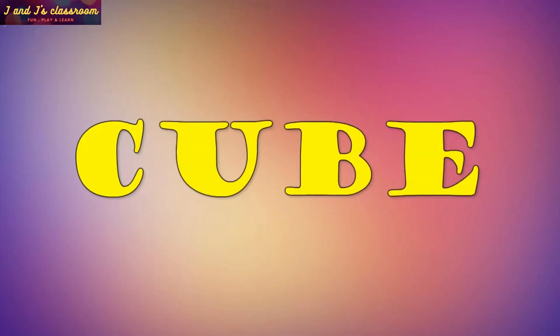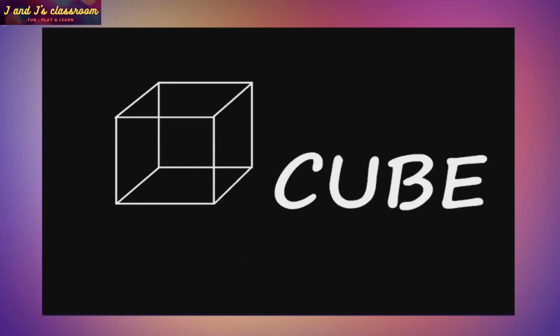Cube. Let's draw a cube. Draw two squares and join these two squares with straight lines like this. Now what is it? Cube. C-U-B-E Cube.